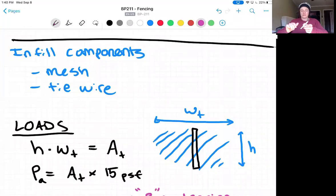Hello, everyone. In this final short fencing lecture, we're going to discuss the infill components, which in the case of the F2 detail is the fence mesh and the tie wires that tie fence mesh to the cable.